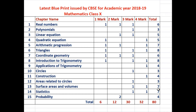From Statistics, 1 question of 3 marks and 1 question of 4 marks — a total of 7 marks will be asked. From Probability, 2 questions of 2 marks each will be asked. The most important lessons are Triangles, Arithmetic Progression, Surface Area and Volume, and Statistics — focus on these to score good marks.